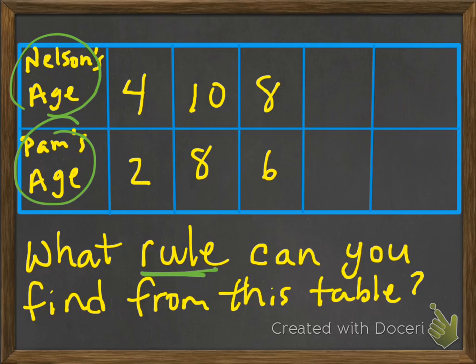Well, let's take a look. If we start with Nelson's age, and we go find out what Pam's age is too, what happens there? Well, it looks like we go 4 minus 2, and we get 2. That seems simple, but let's see if that rule applies all the way across.